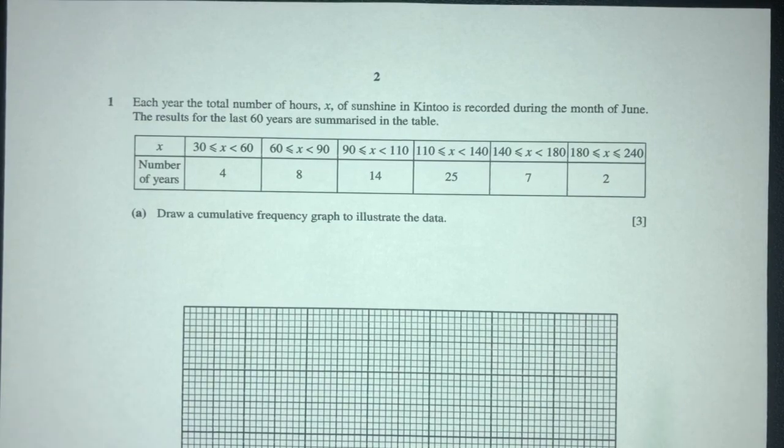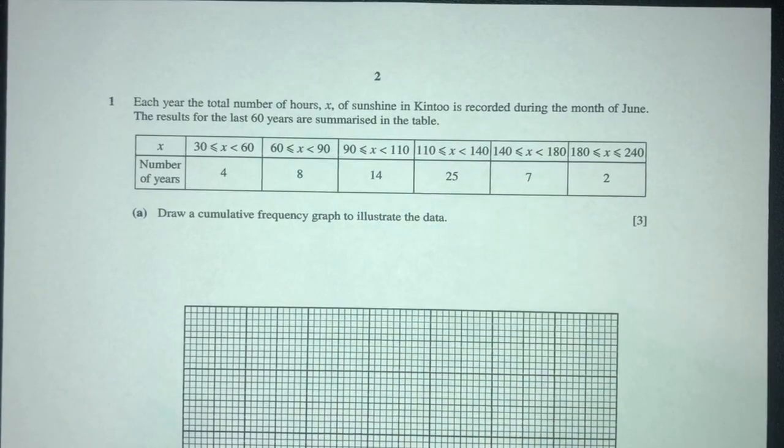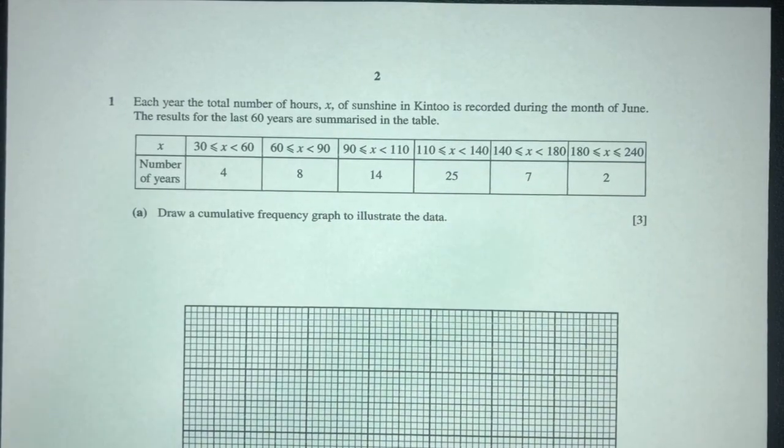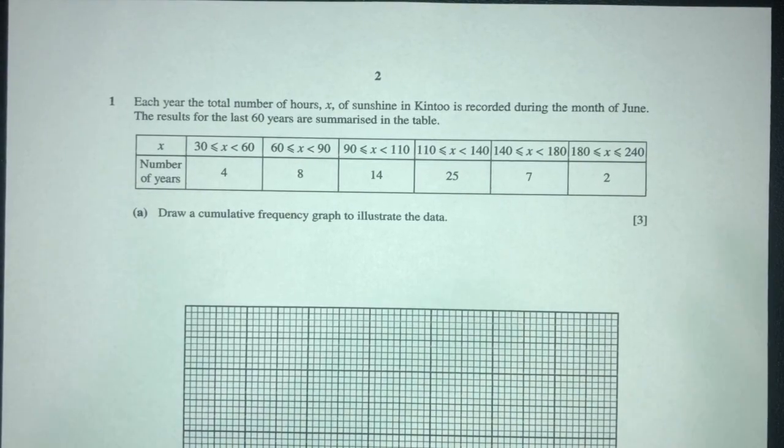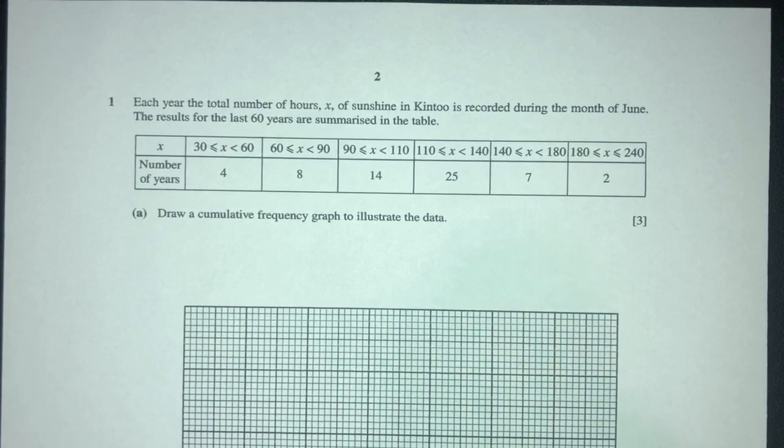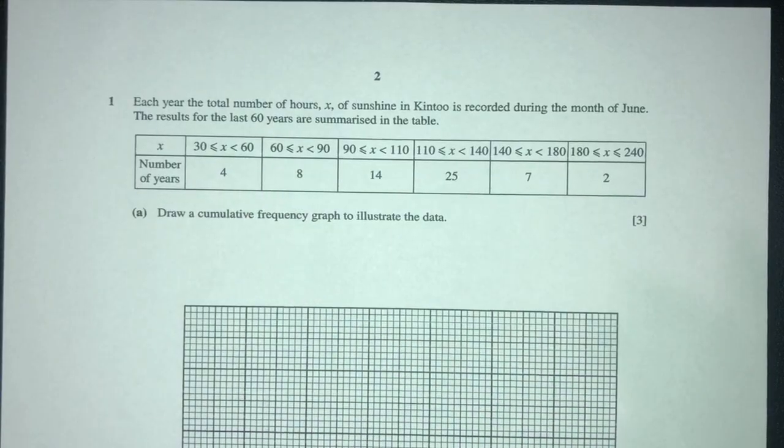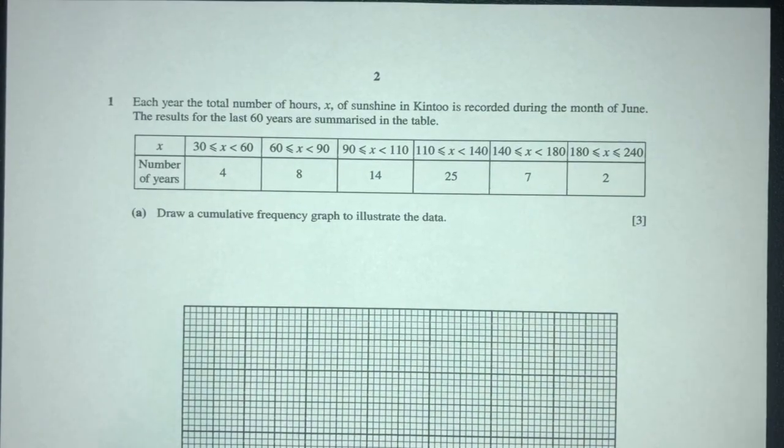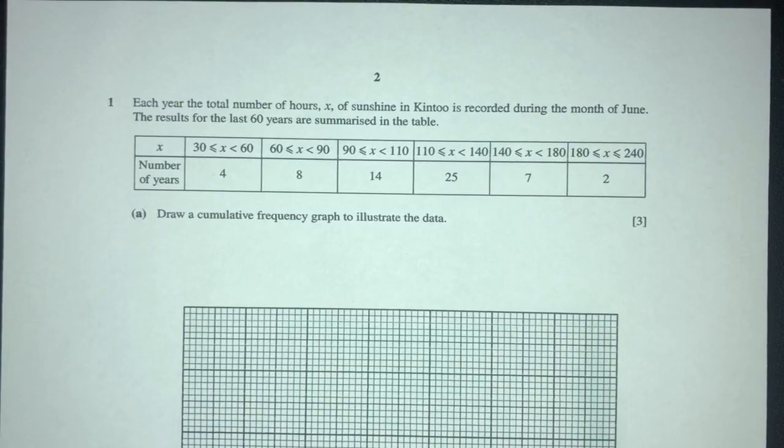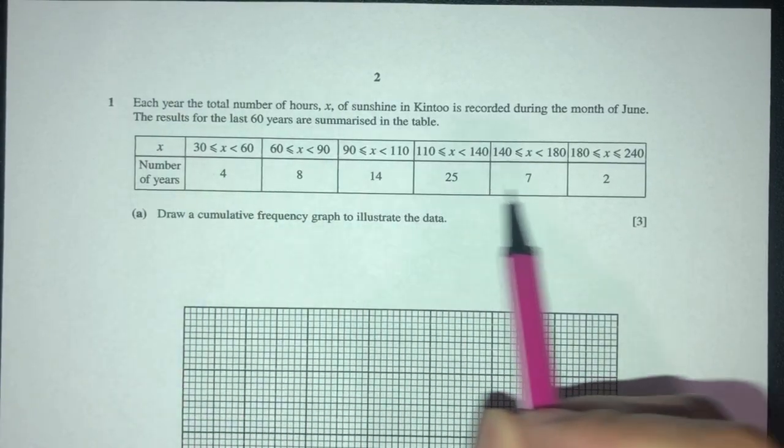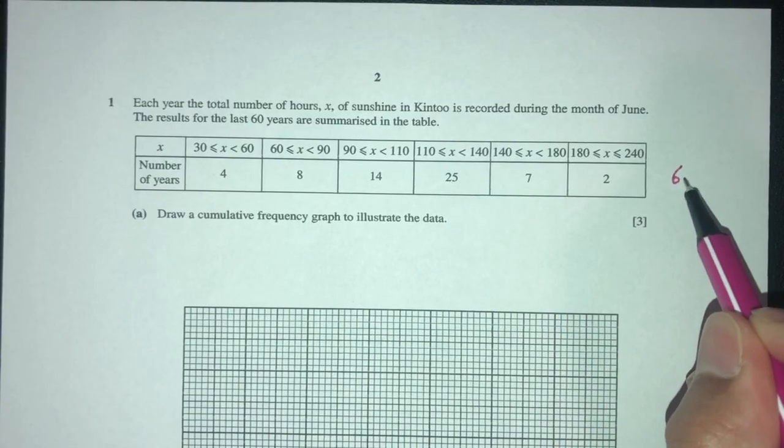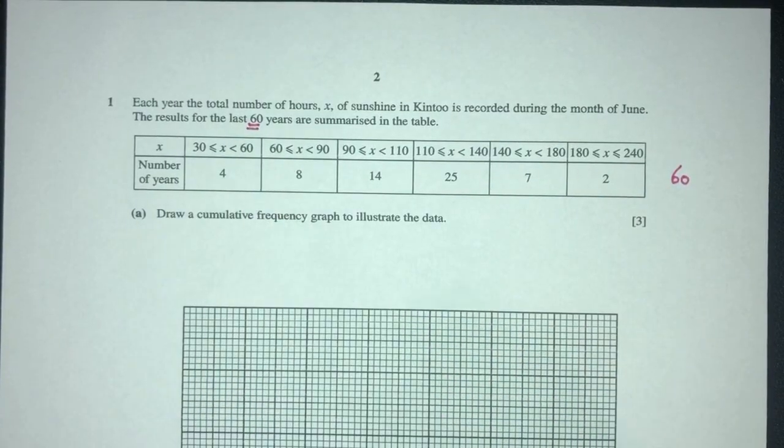So here we have question number one. Each year, the total number of hours, x, of sunshine in Kintu is recorded during the month of June, and the results for the last 60 years are summarized in the table below. So basically, we have to look at this table below to help us solve the questions. Now, the number of years - if you add everything, you're supposed to get 60, because it tells you there are 60 years in total.